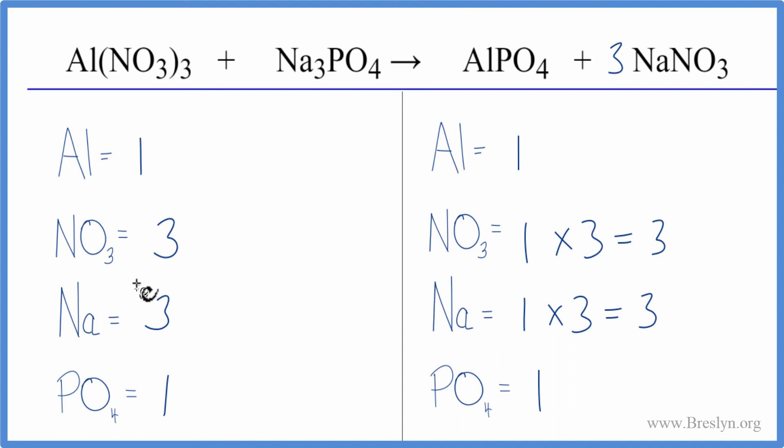This is Dr. B with the balanced equation for Al(NO3)3 plus Na3PO4. Aluminum nitrate plus sodium phosphate. Thanks for watching.